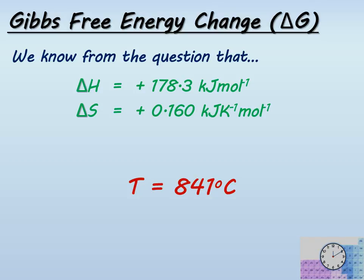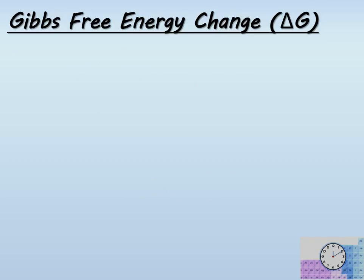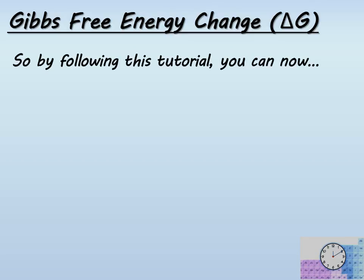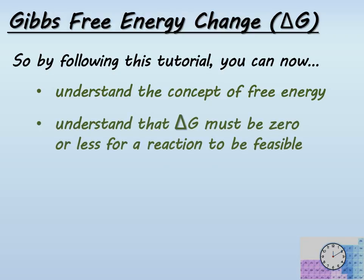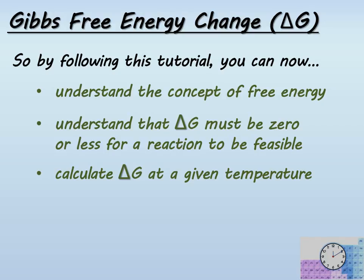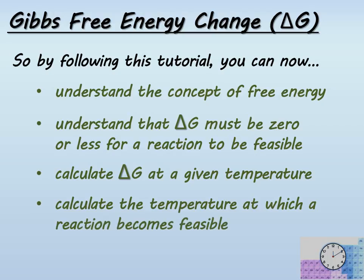So we've worked through that example. Be aware that in some A2 exam questions, you may be expected to calculate an enthalpy change from formation enthalpy data, and you may be asked to calculate entropy change from the entropies of the reactants and the products. By following this tutorial, you can now understand the concept of free energy, understand that delta G must be less than or equal to zero for a reaction to be feasible, calculate delta G at any given temperature, and calculate the temperature at which the reaction becomes feasible. Just remember to make sure the entropy is converted into kilojoules per Kelvin per mole.